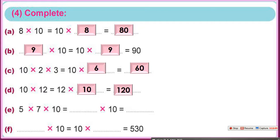5 times 7 times 10 — who can remember the table of number 5? 5 times 7 equals 35, and 35 times 10 equals 350. And the last one, F, the result is 530.